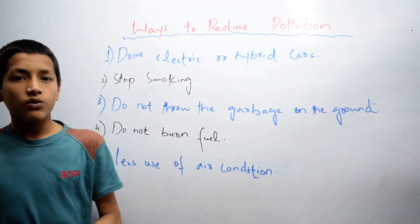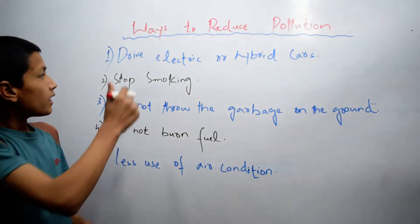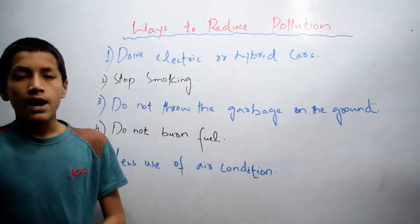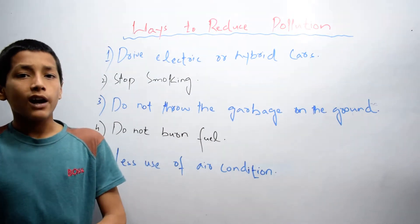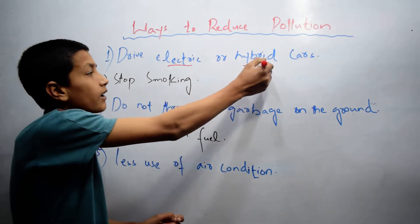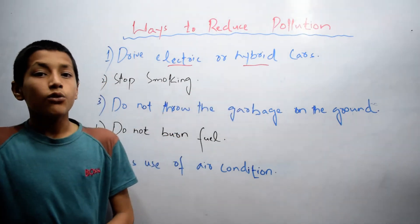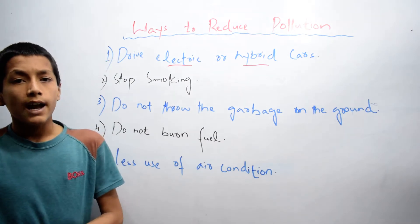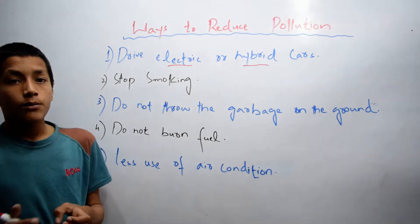Let's start from the first one, which is drive electric or hybrid cars. If you drive a car, use electric or hybrid cars because they do not produce smoke, so they do not cause pollution. This is the first way to reduce pollution.